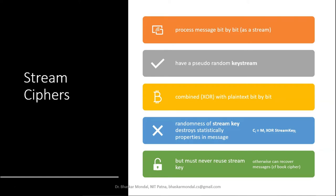The randomness of Stream Cipher destroys the statistical properties in the messages. For example, in an image, every consecutive pixel is quite similar — if there is a red color in an image, it will not be for only one pixel; a region will be red with perhaps a thousand pixels all being red. Stream cipher destroys that statistical property, which is called correlation in the message.